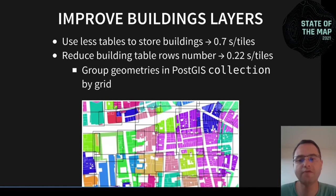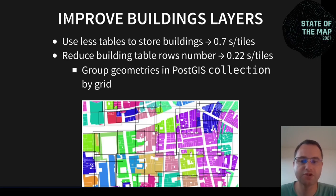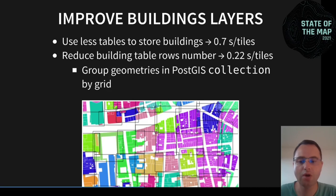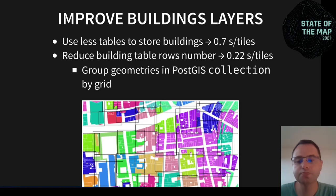To improve this, we need to reduce the number of tables used by OpenMapTiles. At the start of our project, OpenMapTiles was using many tables to store buildings. By reducing the number of tables we already made improvements in speed. But the best improvement comes from reducing the number of rows in the table to reduce index usage and database reads. To do this, we cluster — grouping buildings using a grid. Buildings are saved as a PostGIS collection when grouped. It is not a merge of buildings, so when generating tiles, we can ungroup buildings with the same attributes and serve tiles exactly as before.